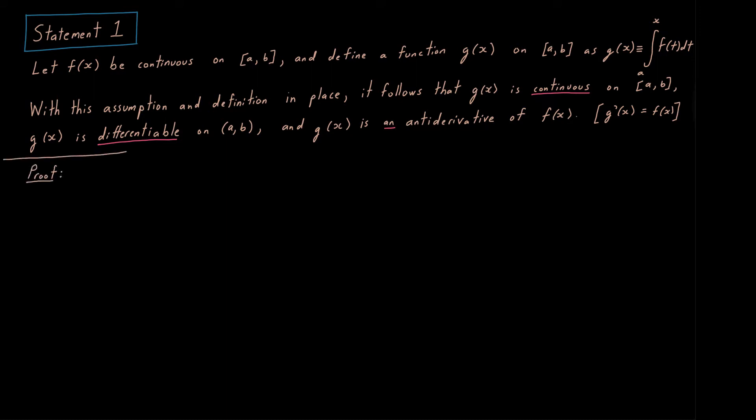How about we prove this guy? The proof's going to proceed like so. We're going to pick any number x from inside that open interval, and we're also going to pick any positive number h, such that x plus h remains inside that open interval a,b. Then, we're going to consider the difference g of x plus h minus g of x. We just apply the definition like so, two times. a to x plus h for the first one, and a to x for the second one.